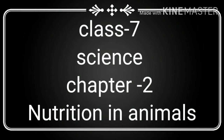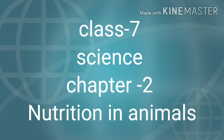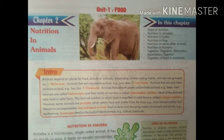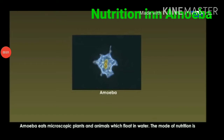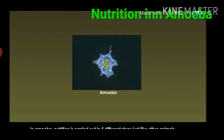Good morning students. Today, Class 7 Science Chapter 2 - Nutrition in Animals. As we already studied nutrition in plants, let us start nutrition in amoeba. Amoeba eats microscopic plants and animals which float in water.